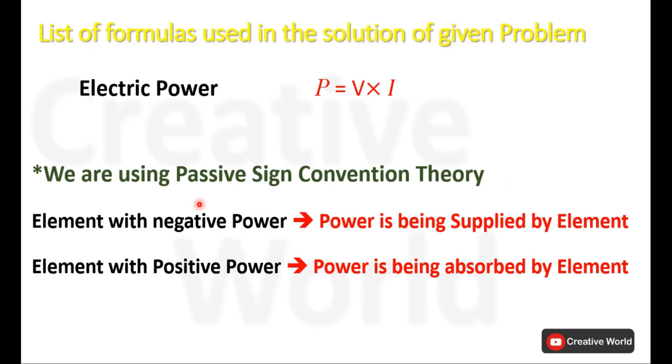In this scenario I will be using the electrical power conventional formula, which is voltage multiplied by current, and passive sign convention theory will be used for the solution of this scenario.